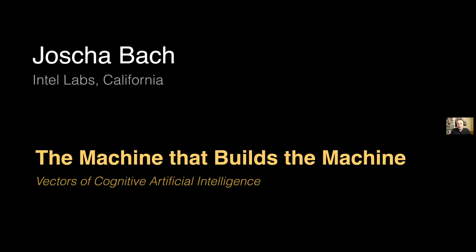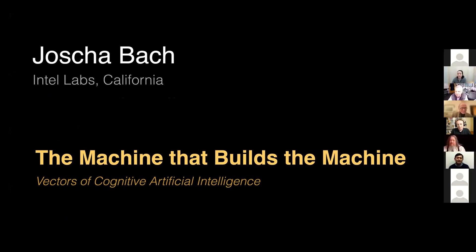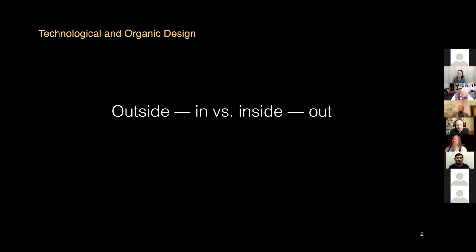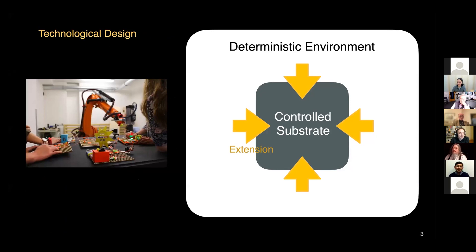The machine that builds the machine is a very interesting topic when we think about the brain, because our mind is something that is not just designed as a technological system from the outside in, but as biological and social systems are, from the inside out. If we look at this difference: when we design a system in our lab, we start from a deterministic environment and we take a substrate into this environment that is not structured yet in the way we want it to be structured, but we can fully control it, and we extend our determinism into this new part of the universe.